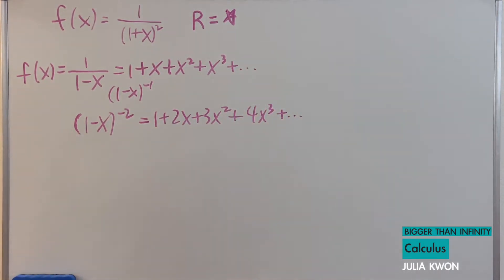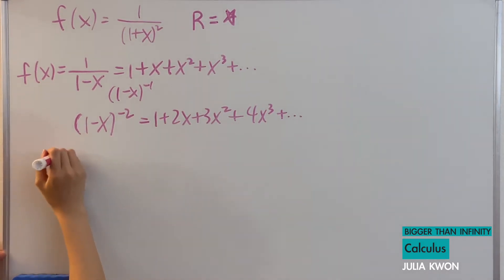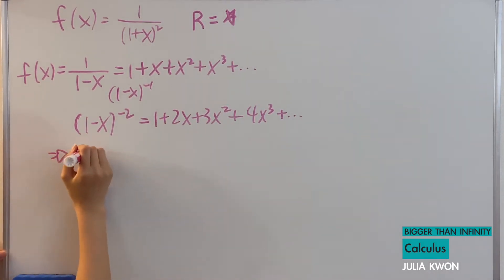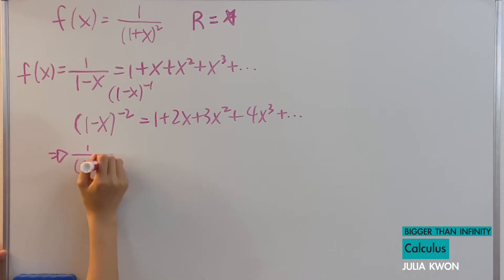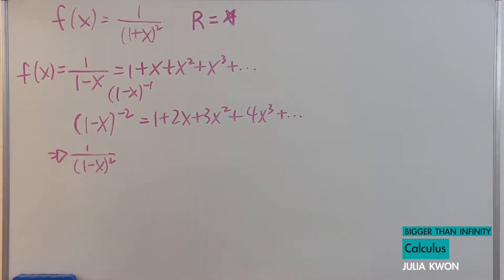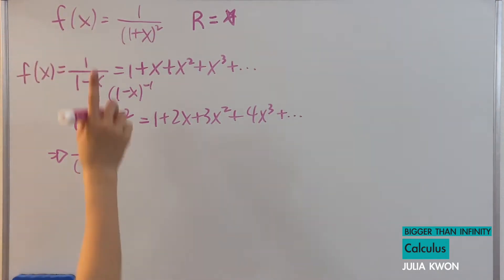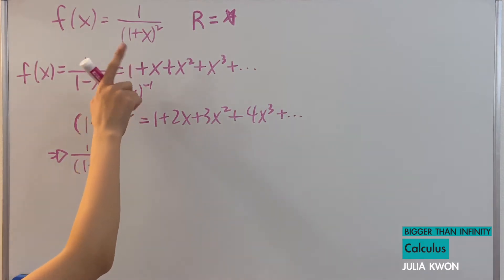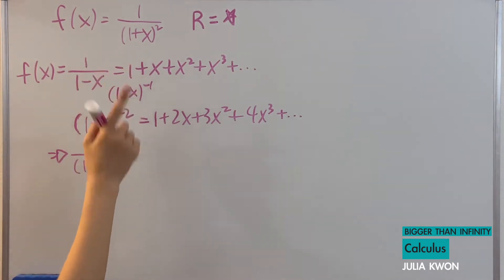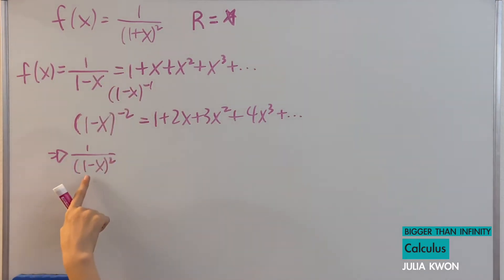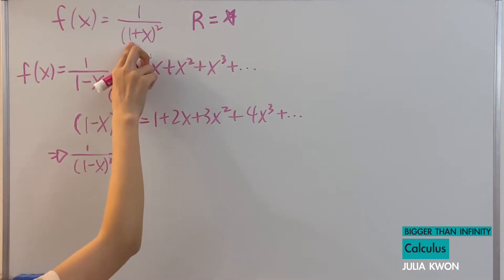And now notice that this is equal to 1 divided by 1 minus x squared. This is really similar to our original function, 1 divided by 1 plus x squared, except we have a negative instead of a positive here.